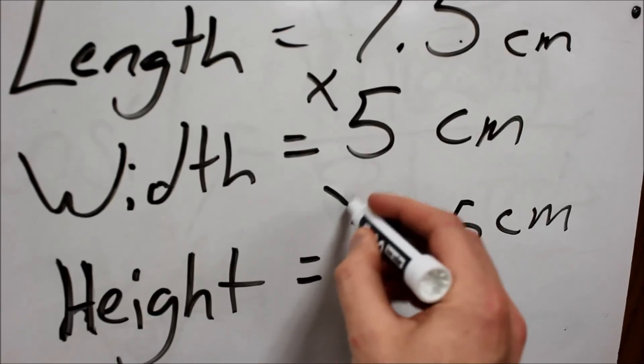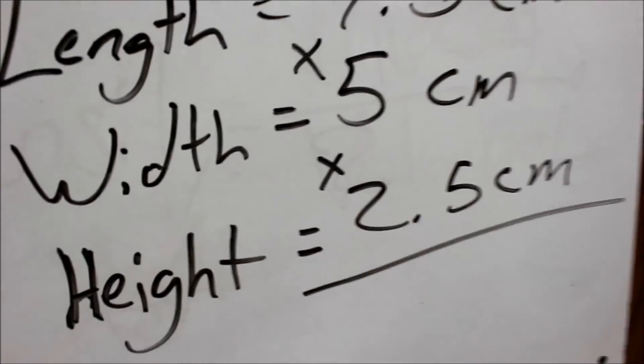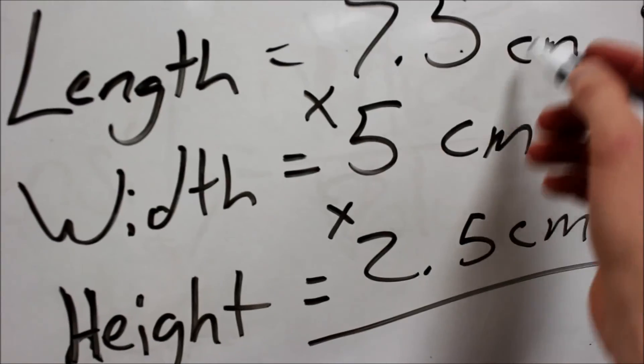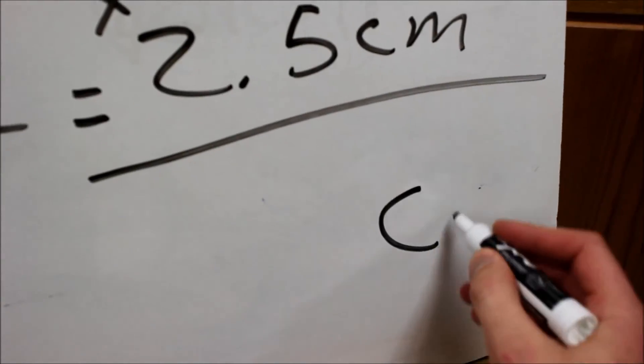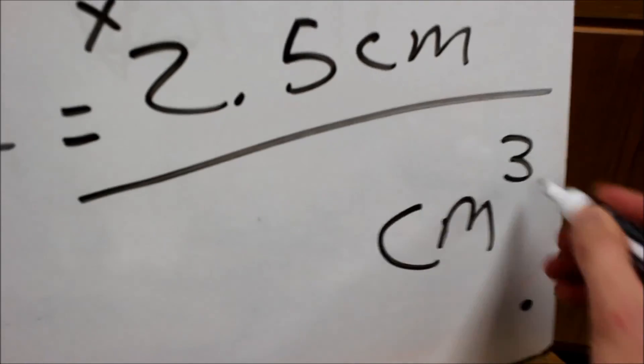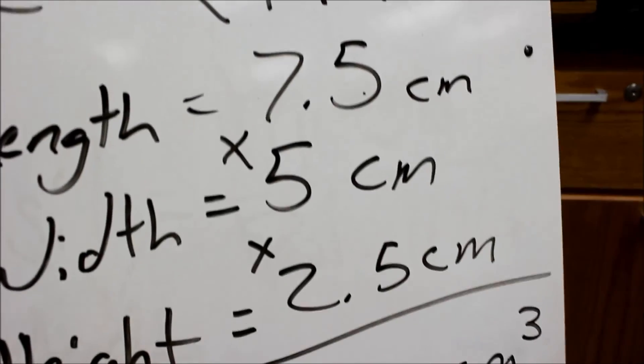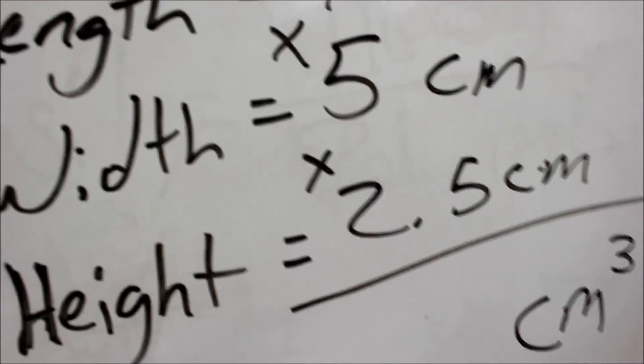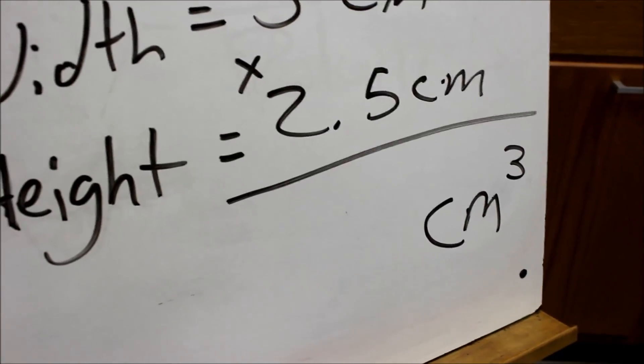So multiply and I get my volume. But I need to make sure I have the correct unit. The end unit would be centimeter cubed, because I'm multiplying one, two, three centimeters. So cubic centimeters.